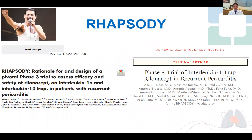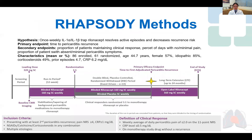Moving on to Rhapsody, which is the phase 3 randomized controlled trial for Rilonacept in recurrent pericarditis. This has been a pivotal multi-centered randomized withdrawal trial for the treatment of recurrent pericarditis in patients with active pain and elevated inflammatory markers. All patients are treated with three months of Rilonacept during the run-in period.